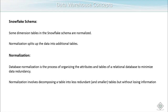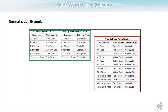The snowflake schema is somewhat similar to the star schema, with the difference that the dimension tables are normalized in the snowflake schema. Normalization splits data into additional tables. Database normalization is the process of organizing the attributes and tables of a relational database to minimize data redundancy. It involves decomposing a table into less redundant tables without losing information. So in the snowflake schema the dimension tables are normalized, whereas in the star schema the dimension tables are not split.